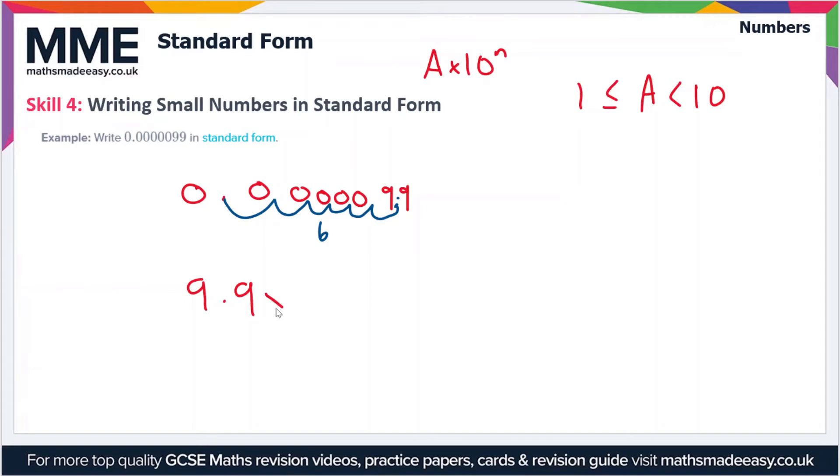So that means our power of 10 is going to have a 6 in it. In other words, n equals—it's not going to be 6 though, it's going to be minus 6.